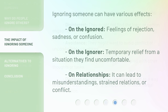Ignoring someone can have various effects: on the ignored — feelings of rejection, sadness, or confusion; on the ignorer — temporary relief from a situation they find uncomfortable; and on relationships — it can lead to misunderstandings, strained relations, or conflict.